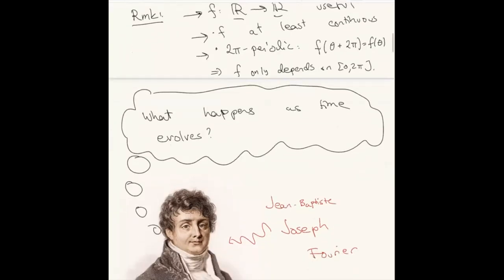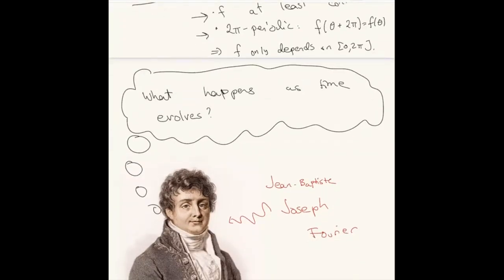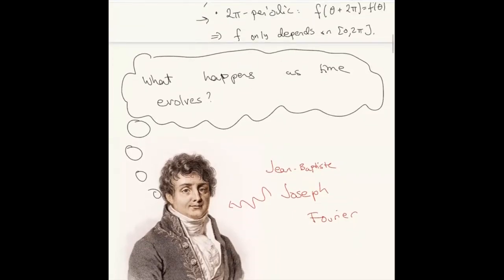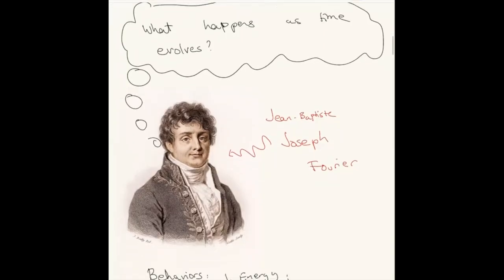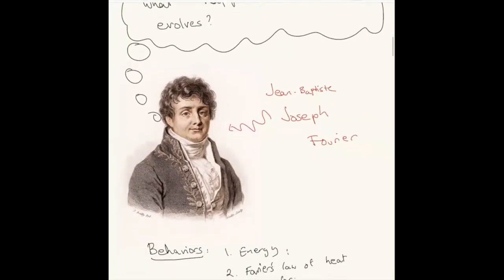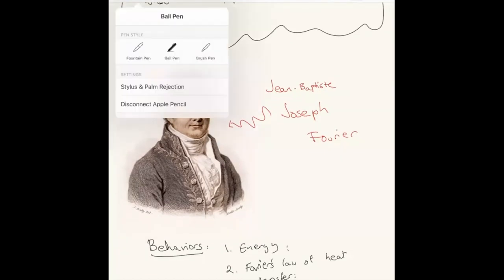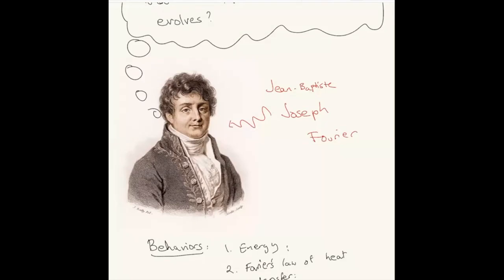We're looking at continuous periodic functions on the real line which correspond to functions on the circle. The question is what happens as time evolves. This was studied most famously by Jean-Baptiste Joseph Fourier. There were three behaviors he used to derive an equation: energy, the heat energy is preserved or heat content is preserved, so there are conserved quantities in this system.